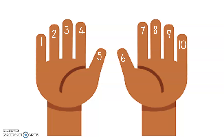Now if we do times tables, we go all the way to number 12. But I've got no more fingers for 11 and 12. Mrs Mitchell has an idea — we can use our palms. On my left hand I'm going to put 11 in my palm, and on my right hand I'll put number 12. Problem solved!